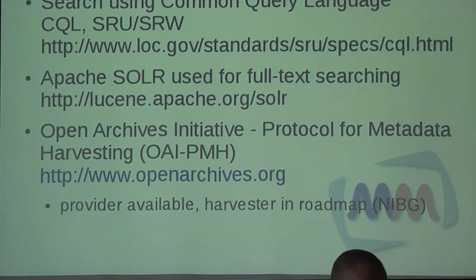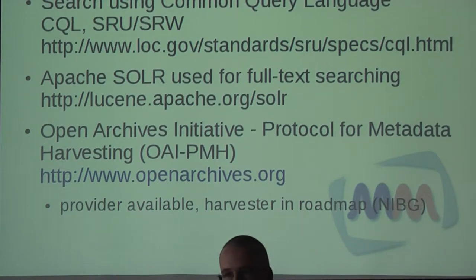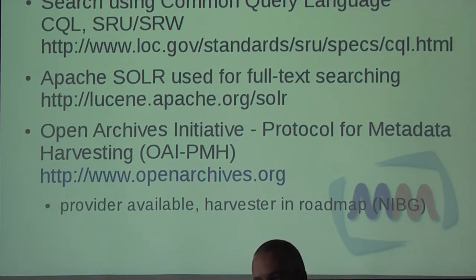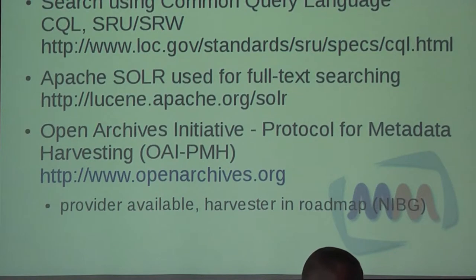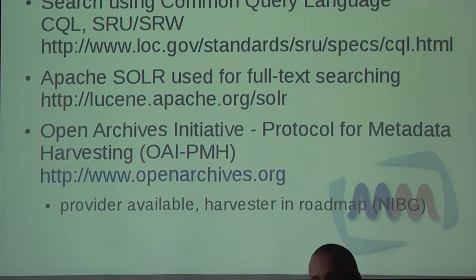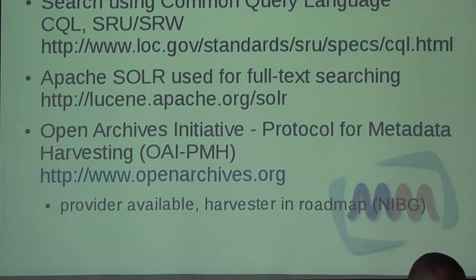Other standards we use include the Contextual Query Language (CQL). Once the assets with their metadata are inside the system, you can use CQL, which is SRW-based — so you put a URL in and get back a list of asset IDs that conform to your search. We support CQL level 2, which means every aspect of the CQL standard is covered, allowing you to make all kinds of queries. Behind the scenes, we use Apache Solr to index all the metadata that goes along with the assets.